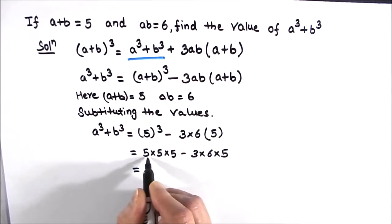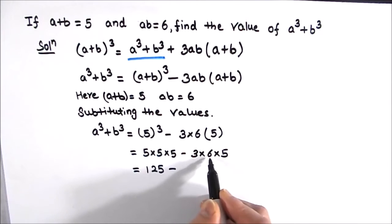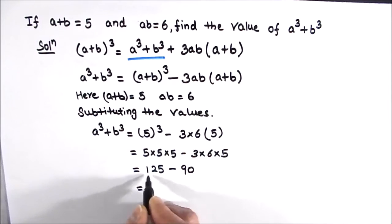This is equal to 5 times 5 is 25 and 25 times 5 is 125 minus 6 times 5 is 30 and 30 times 3 is 90. So 125 minus 90 will give us 35.